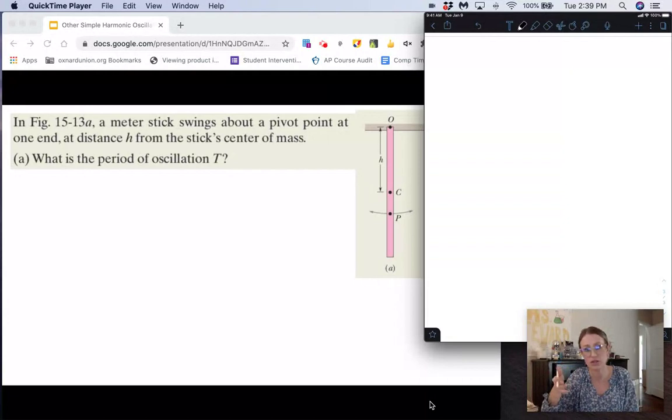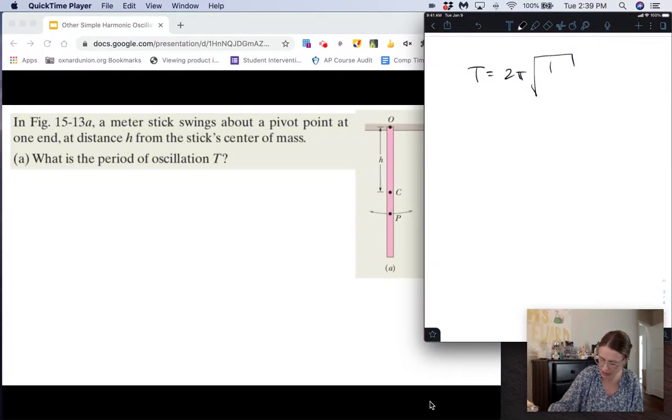So for a physical pendulum like this, the period equation is given by 2π times the square root of I, our rotational inertia, over mgh, where h is the distance from that center of mass to the axis of rotation.